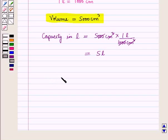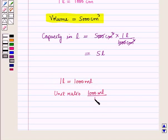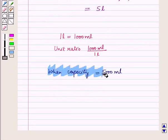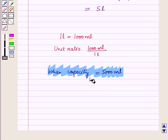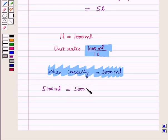Alternatively, we can use the relation 1 liter = 1,000 milliliters, which gives the unit ratio 1,000 mL per 1 liter. If a capacity is 5,000 milliliters and we need to convert to liters: since milliliters is a smaller unit and liters is a larger unit, we multiply by the reciprocal of the unit ratio. So 5,000 mL × (1 liter / 1,000 mL) = 5 liters.